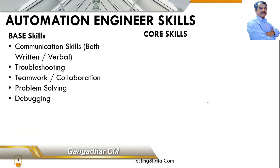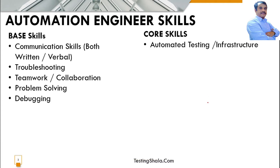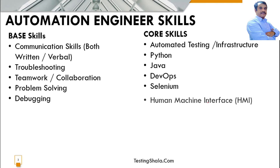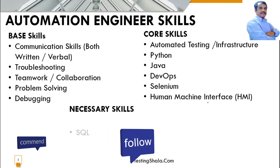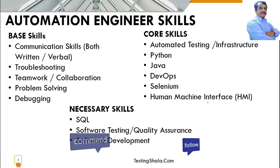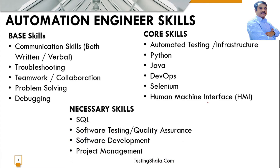The core technical skills for an automation engineer include a good understanding of automated testing and automation infrastructure, Python and Java programming, DevOps technology, Selenium for web-based automation, human-machine interface for AI-related work, SQL, software testing and quality assurance, software development concepts, and project management concepts.